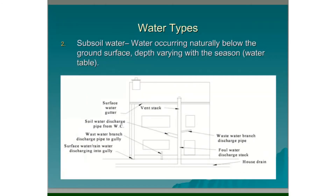Subsoil water. This is water occurring naturally below the ground surface, and the depth varies with the season — this is the water table. During the winter this will be much higher than during the summer.